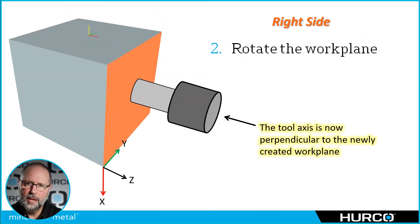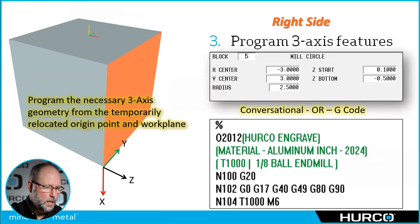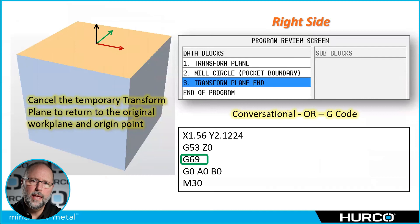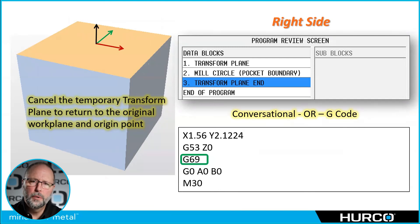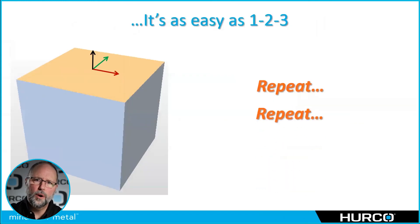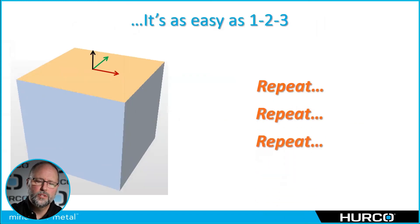We program whatever three-axis features we need at this point. And then when we're done, we're going to end the Transform Plane with either a Transform Plane End conversational block or a G69. That's going to put us back to the original zero point — the original origin point for the program. Then we just keep doing this over and over again until we've reached all features on all sides of the part and have everything completed.